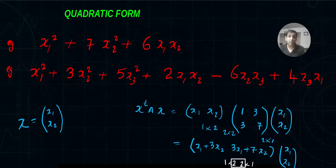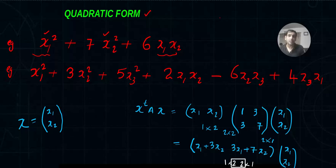Hello friends, welcome. In this video we will learn the last topic in matrices: quadratic form. A quadratic form is a second degree homogeneous expression. This is a quadratic form in two variables x1 and x2 — each term has degree two. The degree of a product is the sum of the powers. This is a quadratic form in three variables x1, x2, x3.